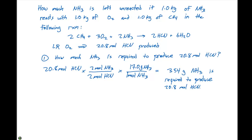So we know that oxygen limits this particular reaction. It's the limiting reactant, and we're going to have 20.8 moles of HCN produced. We need to figure out how much ammonia is required to produce that amount.